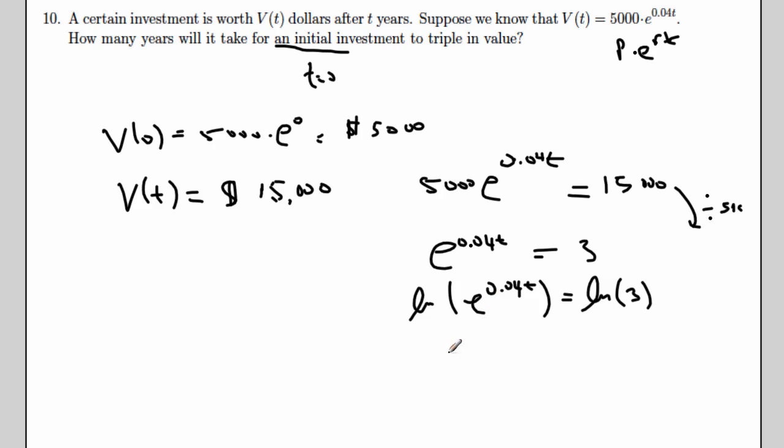The natural log and e to the x are inverses of each other. So on the left-hand side, the log and the e clear out, and all I have is 0.04t. And on the right-hand side, I have whatever log of 3 is. That's something I have to write in my calculator to figure out, it's a little bit more than 1.